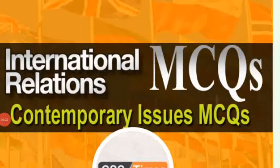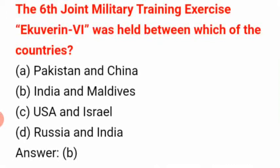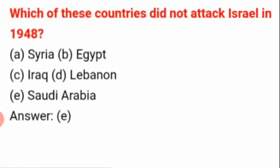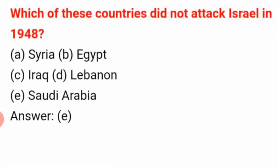International Relations MCQs, Contemporary Issues MCQs. The six joint military training exercise 'Ekuverin' is conducted between which of the countries? The answer is B: India and Maldives. The largest island in the Indian Ocean is answer C: Madagascar.